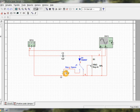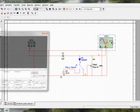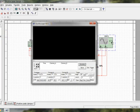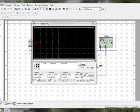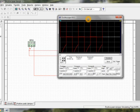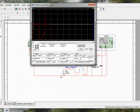Let's check the output on the CRO. The charging and discharging curves of the capacitor can also be seen in the output.